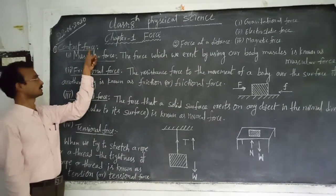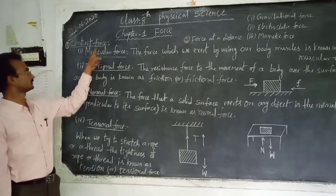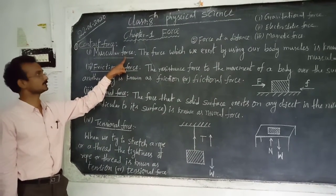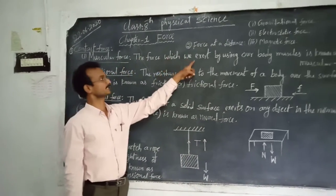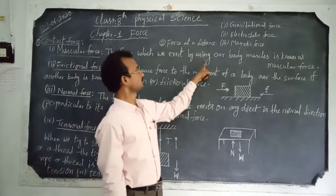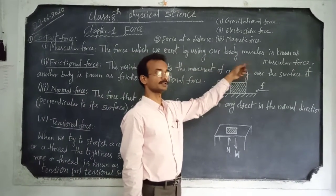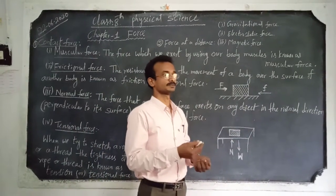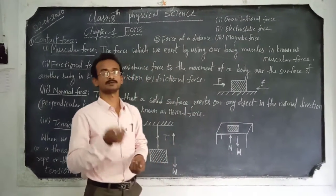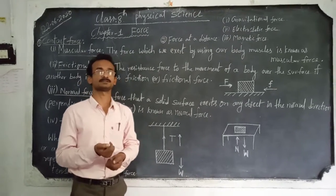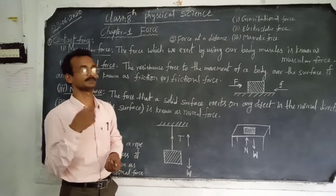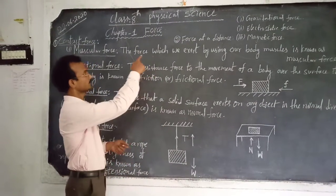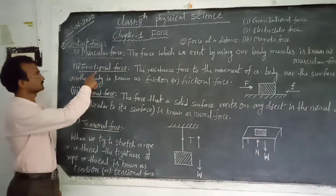Contact force is of four types as you know. The first one is muscular force. The definition of muscular force is the force which we exert by using our body muscles. By using our body muscles we exert some force to take or give some objects — by means of pulling or pushing. That force is called muscular force.